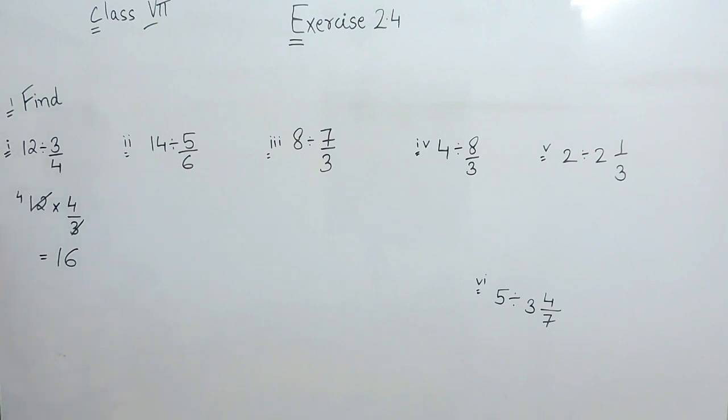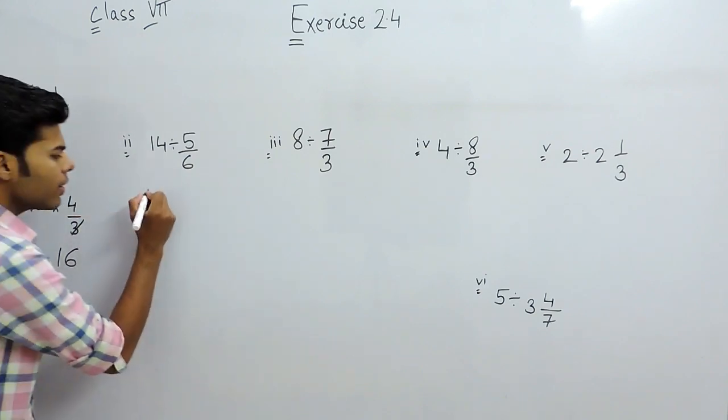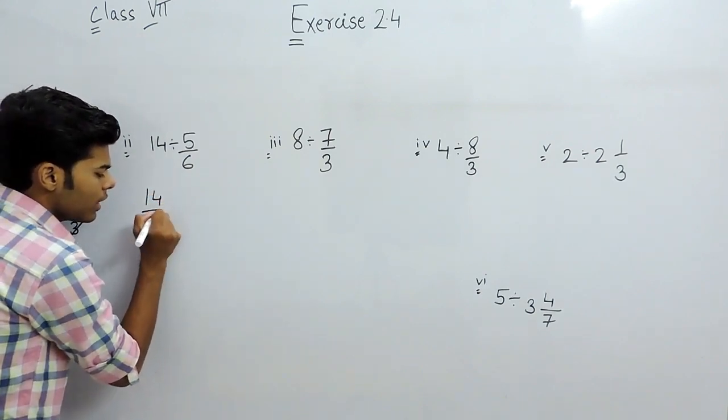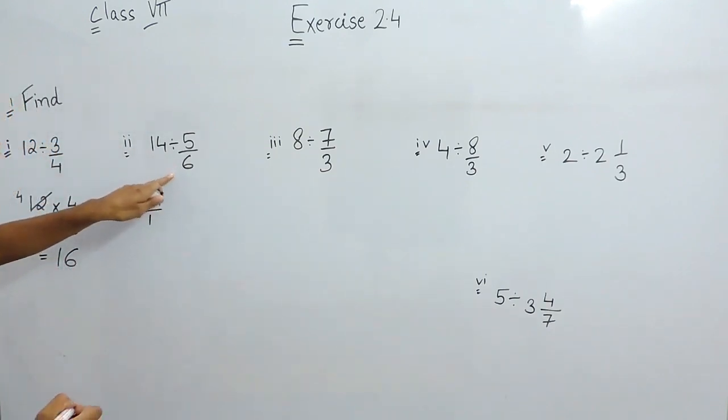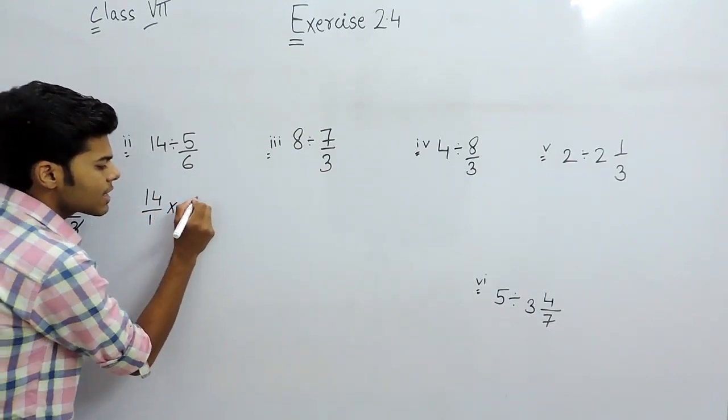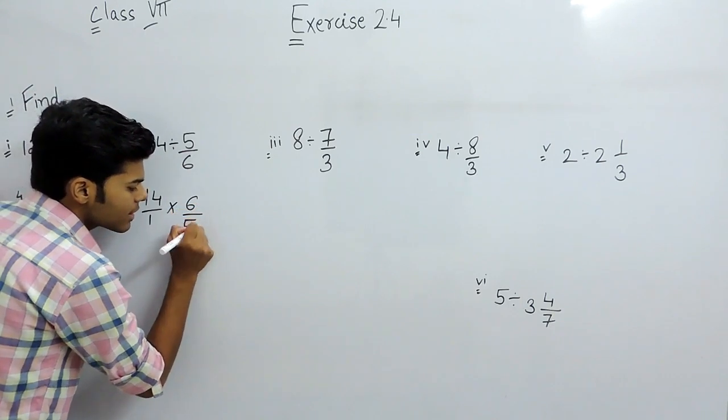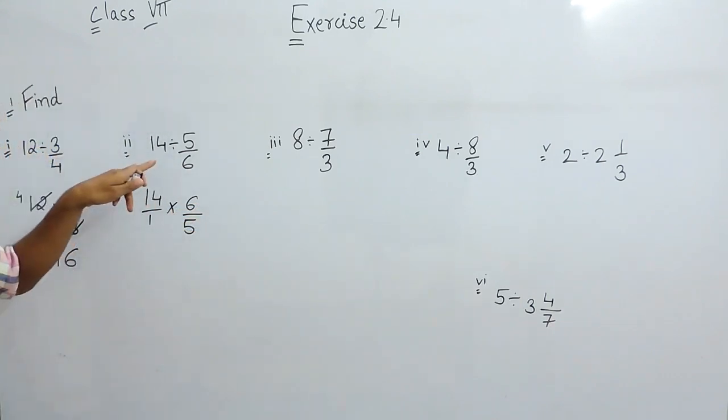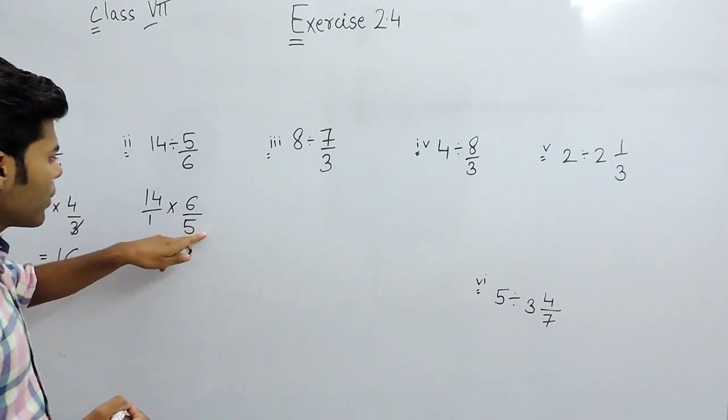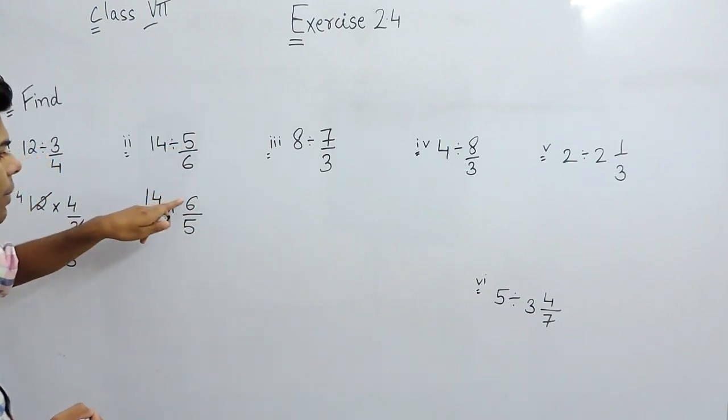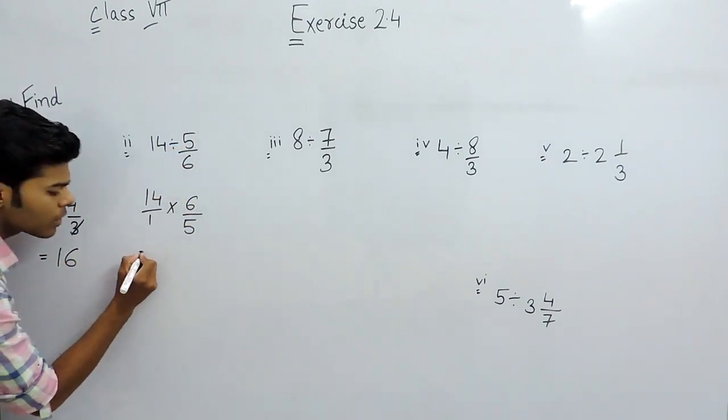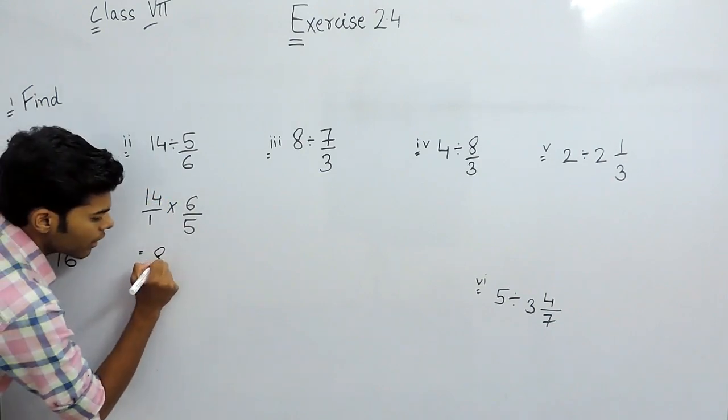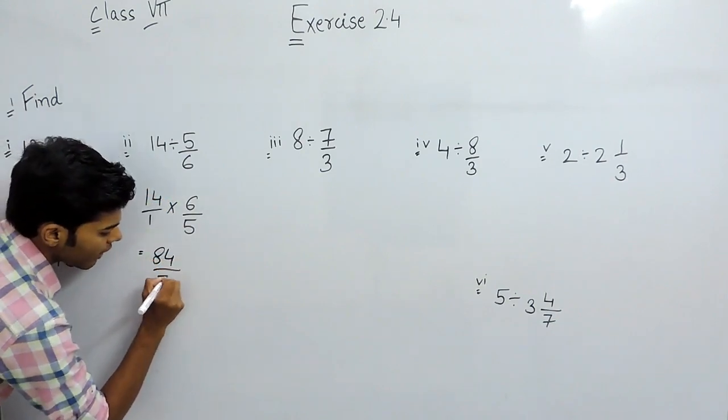Similarly here it will be 14 upon 1 divided by 5 upon 6, so we will multiply it with its reciprocal that will be 6 upon 5. Reciprocal means numerator becomes denominator and denominator becomes numerator. So we will solve it: 14 times 6 is 84 by 5.